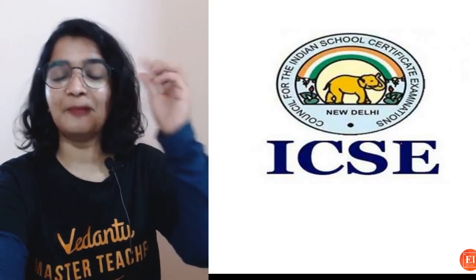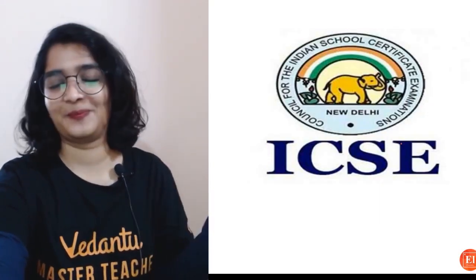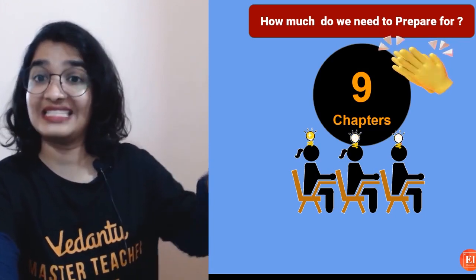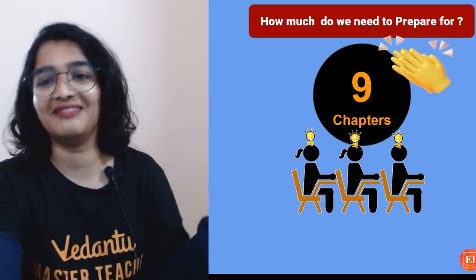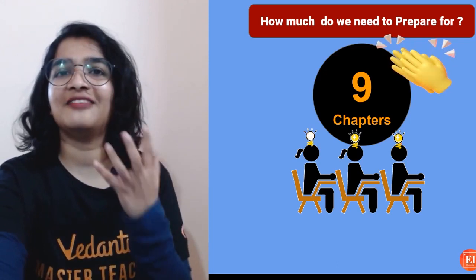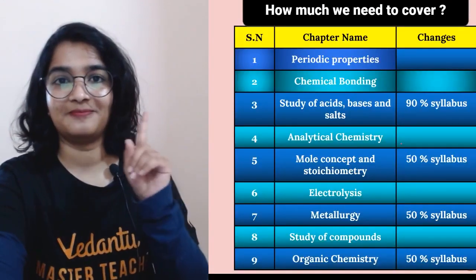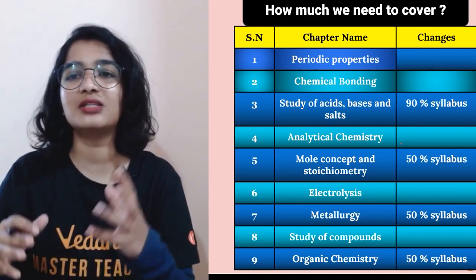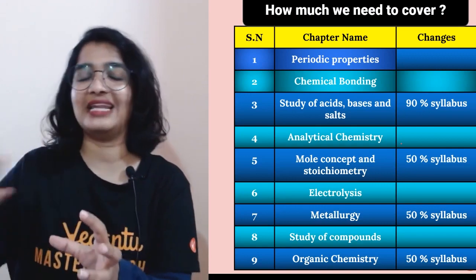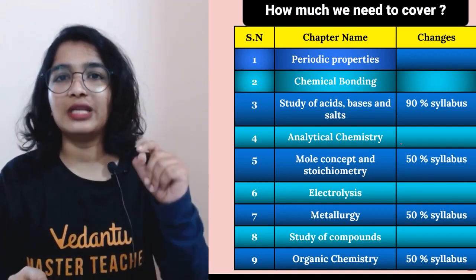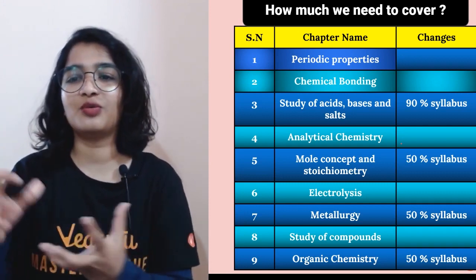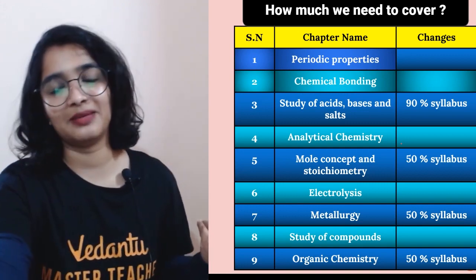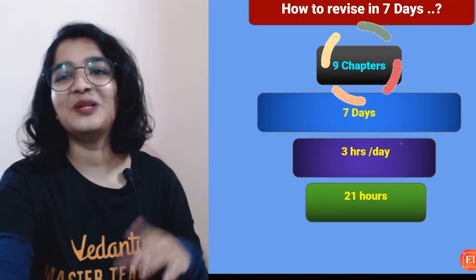For ICSE students, the difference is the number of chapters — nine chapters in seven days. Following the reduced syllabus: Periodic Properties, Chemical Bonding (no change), Study of Acids Bases and Salts (90% syllabus remains, only 10% removed), Analytical Chemistry (little change), and Mole Concept and Stoichiometry (50% syllabus remains).